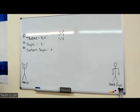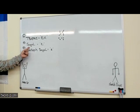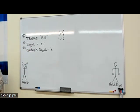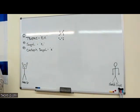So to summarize: you have tsere, which is long; segol, which is short; and hateph segol, which is short or sometimes called 'reduced' — it's a shortened form. Those are your e-type vowels.